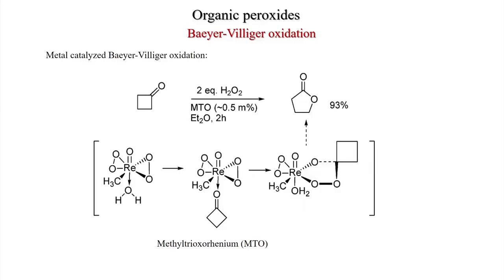There are many reports on metal-catalyzed Baeyer-Villiger oxidation. The idea is to use stoichiometric amounts of hydrogen peroxide with a metal oxide catalyst such as methyltrioxorhenium (MTO). Under this condition, cyclobutanone gives β-butyrolactone (a 5-membered lactone) in very high yield. The MTO complex coordinates with cyclobutanone, the peroxo bond breaks, attacks the carbonyl, and after cleavage you get the lactone. The catalyst is regenerated by H₂O₂.